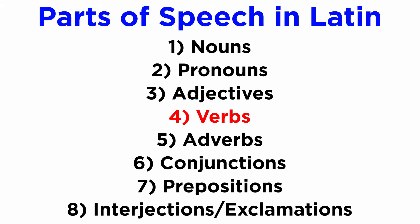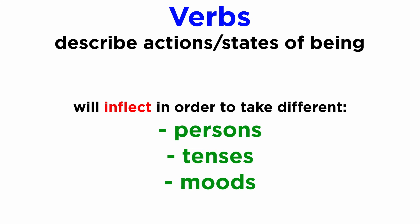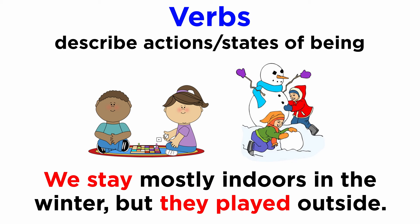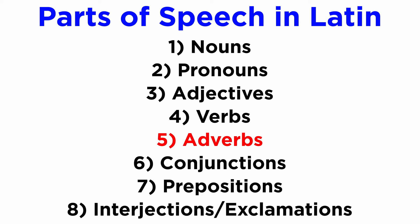Next, we have verbs. These words describe actions or states of being. They are also inflected words, and they take different person, tenses, and moods. For example: we stay mostly indoors in the winter, but they played outside. I hope that they will not get sick.